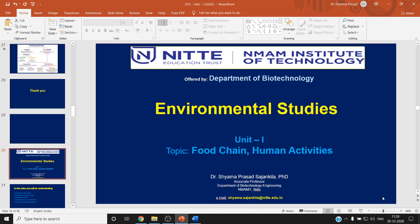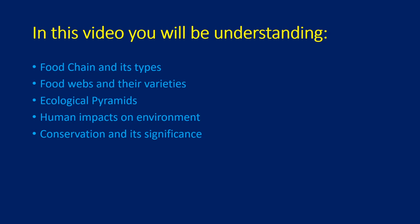In the past video we looked at the concepts of habitat, what a producer is, what a consumer is, and the role of predators, scavengers, and decomposers, and the global feeding methods. In the current video we are going to look at what a food chain is, food webs, ecological pyramids, human impacts on environment, and the significance of conservation.